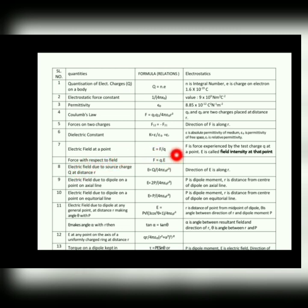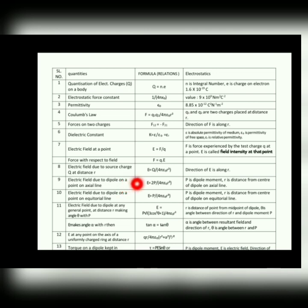Then electric field at a point: E = F/Q. This is the most basic concept of chapter 1 — electric field equals electrostatic force per unit charge. Therefore F = QE. Next, electric field due to source charge Q at distance r: E = kQ/r², which equals Q/(4πε₀r²).